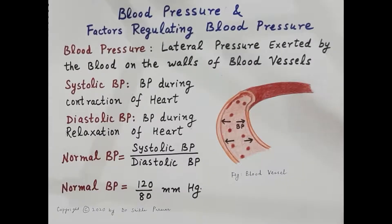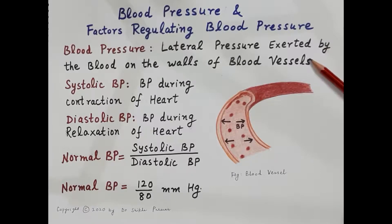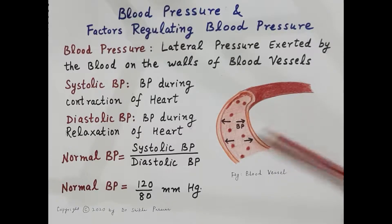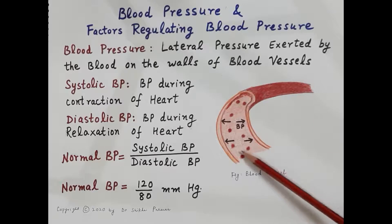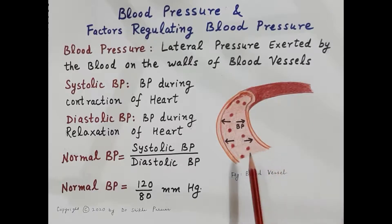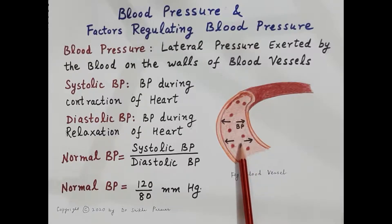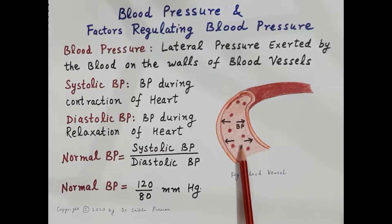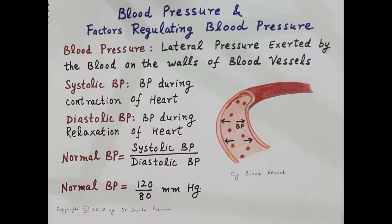Under the introduction to hemodynamics we will now talk about blood pressure and the factors regulating it. The lateral pressure exerted by the blood on the walls of the blood vessels is called blood pressure. This diagram shows a blood vessel with blood flowing through it; the arrows indicate the lateral pressure exerted by the circulating blood on the vessel walls. There are two types of blood pressure: systolic blood pressure and diastolic blood pressure.